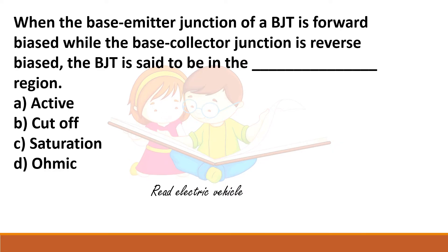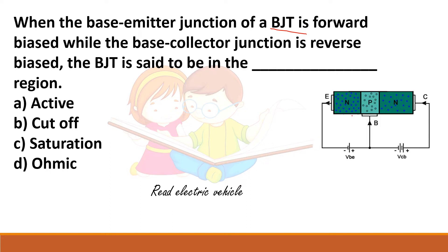When the base-emitter junction of a BJT is forward biased while the base-collector junction is reverse biased, the BJT is said to be in which region? A BJT has two junctions: base-emitter and base-collector. When one is forward biased and the other is reverse biased, the device is in the active region.